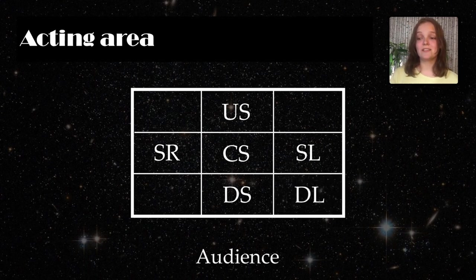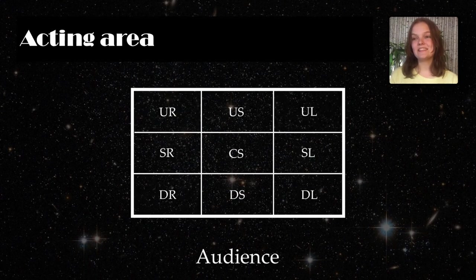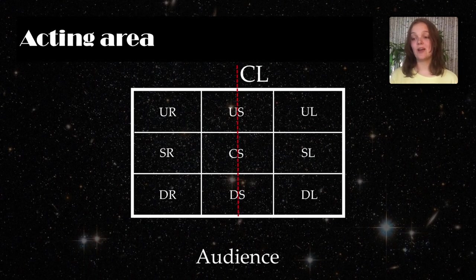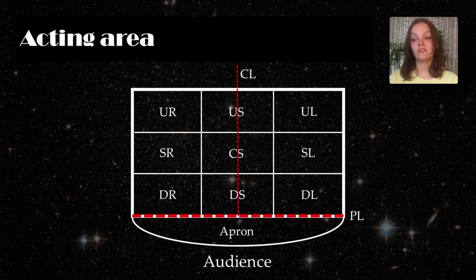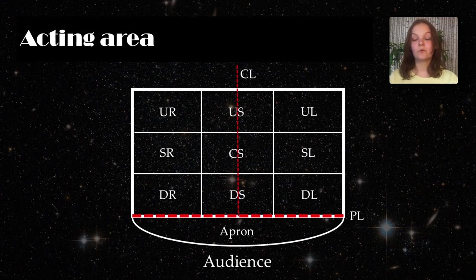There's also downstage left, downstage right, upstage left, and upstage right. Then there's the center line, which is the line that goes through the center of the stage from downstage to upstage. The plaster line is the line that goes perpendicular to the center line, traveling from one side of the proscenium to the other, and the intersection of the center and plaster line is often called the zero-zero point. The apron is a part of the stage that extends in front of the proscenium arc, projecting into the auditorium or seating area, also known as the fore-stage.